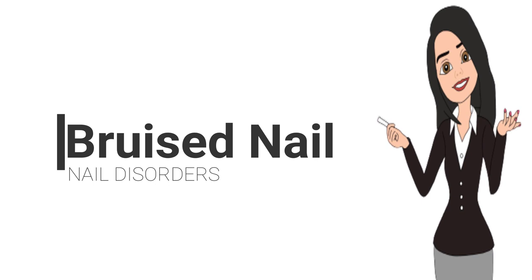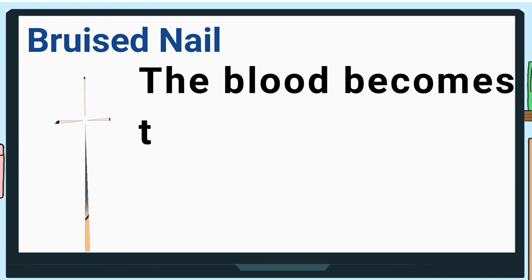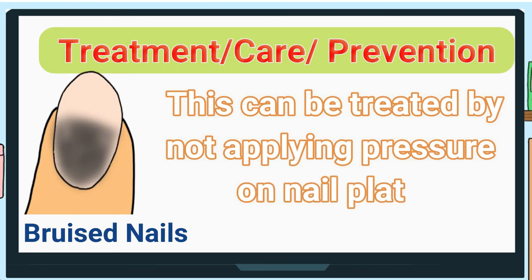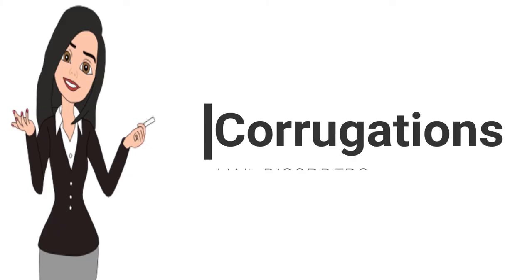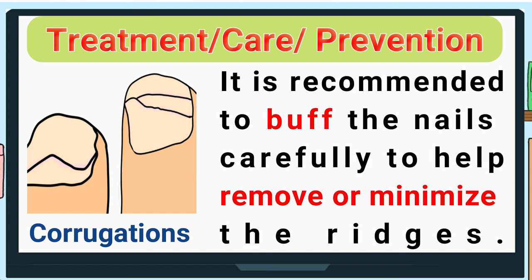Bruised nail is the result of trauma to the nail plate, causing injury to the nail. The blood becomes trapped and there is discoloration under the nail. Treatment: Do not apply pressure on the nail plate. Corrugations are wavy ridges caused by uneven growth of the nails, usually the result of illness or injury. Treatment: Buff the nails carefully to help remove or minimize the ridges.